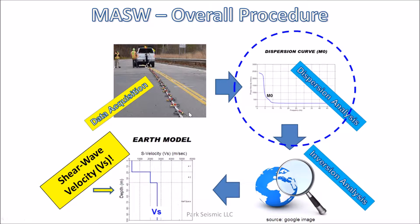This shows an overall procedure with an MASW survey that starts from field data acquisition. Each acquired multi-channel field record goes through two steps of data analysis — dispersion and inversion — to generate one 1D shear wave velocity profile. This particular approach being presented now is related to dispersion analysis of MASW.